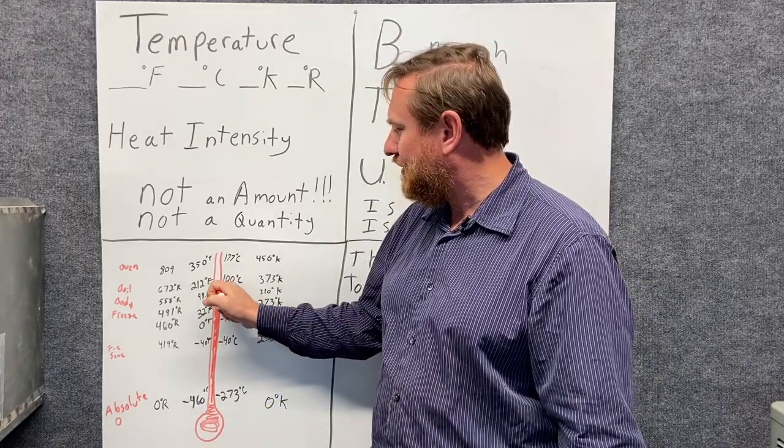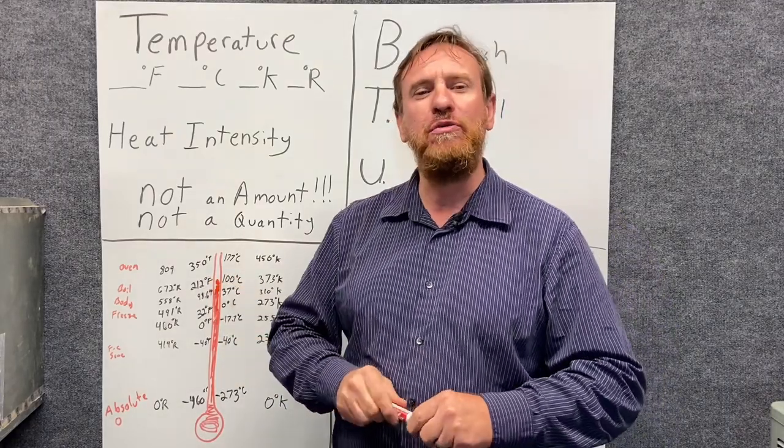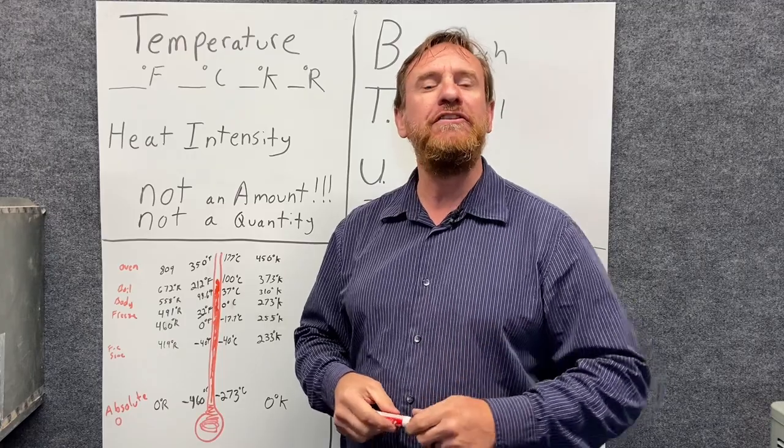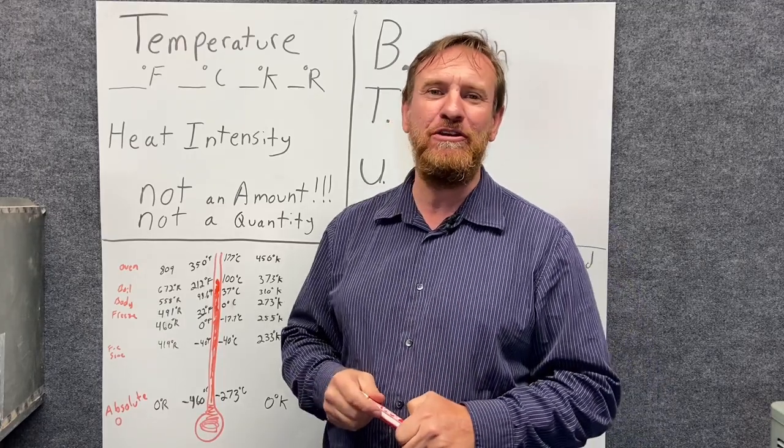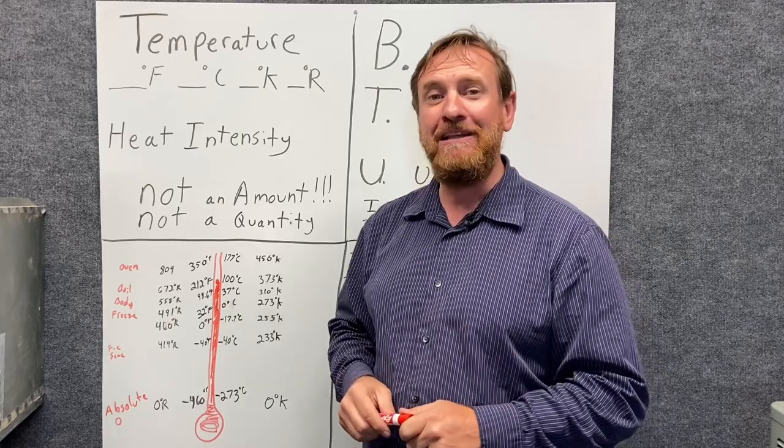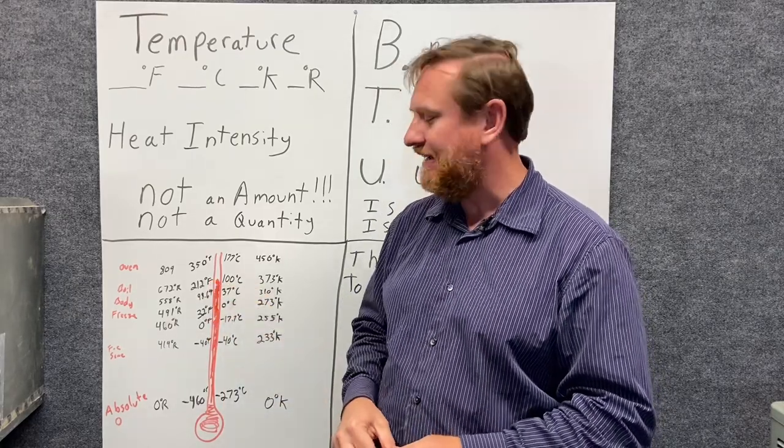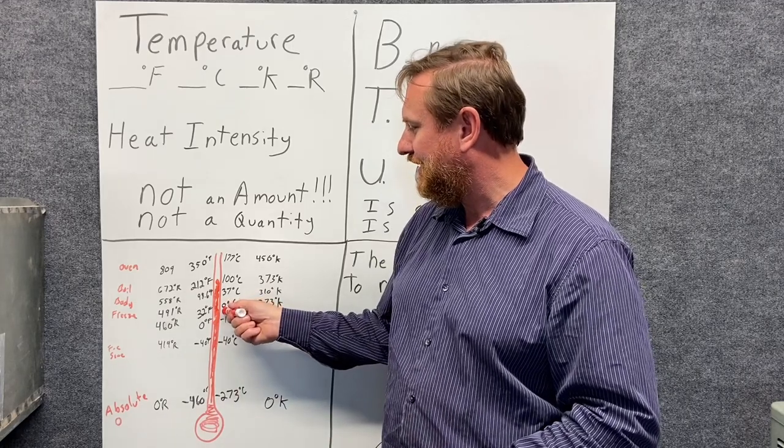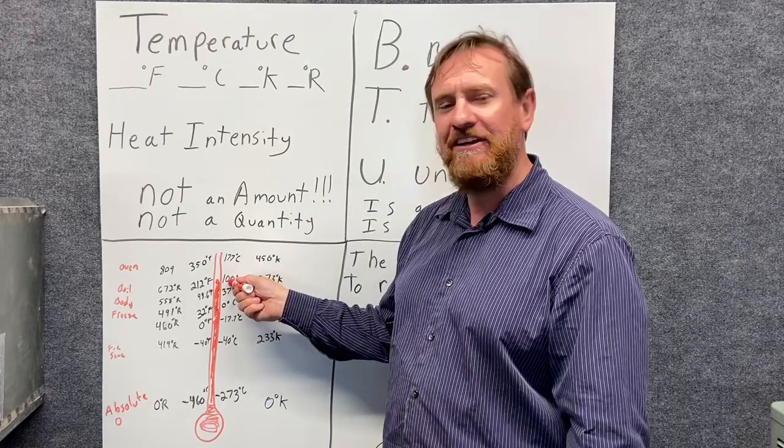But now let's continue to raise our heat energy level up, our intensity level up. And we get to 212 degrees Fahrenheit. Water's going to start boiling at 212. It's going to start changing state at 212. We're going to talk about that number later. So keep in mind, 32 Fahrenheit and 212 Fahrenheit is the same as 0 degrees Celsius and 100 degrees Celsius. They're very important numbers.